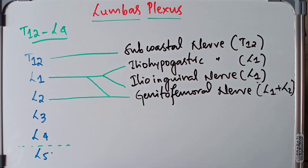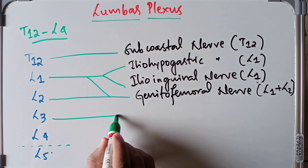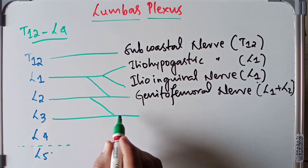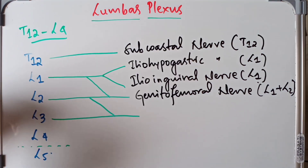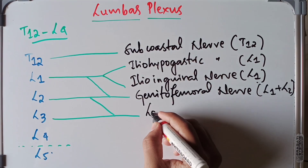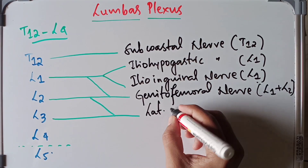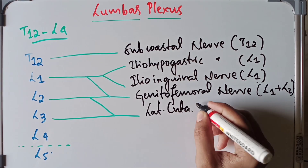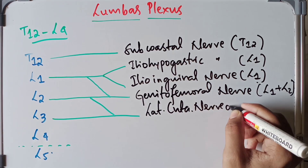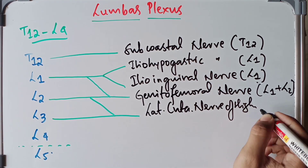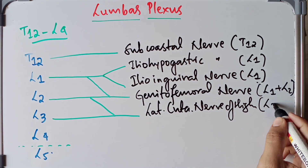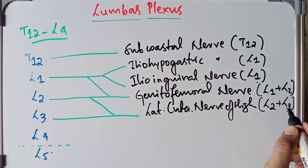The next nerve is the lateral cutaneous nerve of the thigh. It receives its branches from L2 and L3. So the lateral cutaneous nerve of the thigh includes the L2 plus L3 spinal segments.